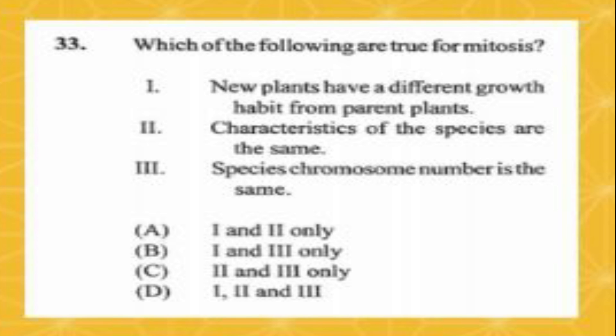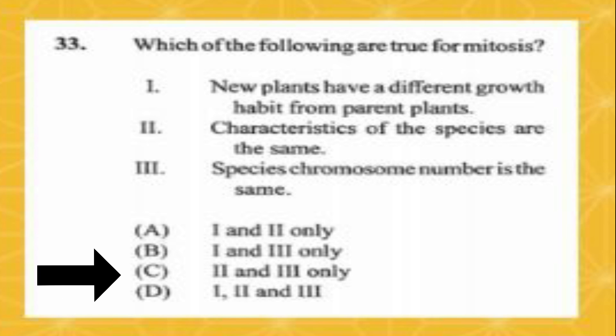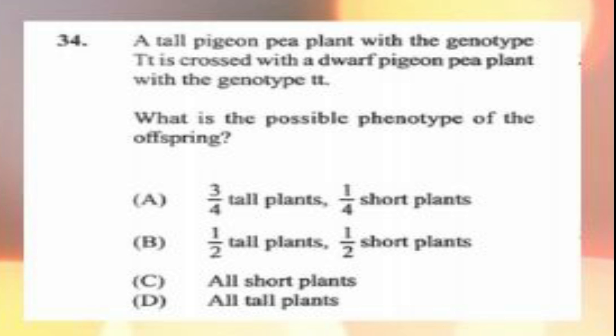Question number thirty-three: which of the following are true for mitosis? One: new plants have a different growth habit from parent plants. Two: characteristics of the species are the same. Three: species chromosome number is the same. A) one and two only, B) one and three only, C) two and three only, D) all three. The answer is C, two and three only, as mitosis is the identical splitting of a cell.